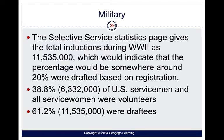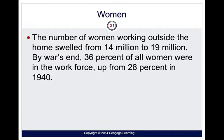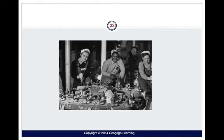Military-wise, the Selective Service total inductions during World War II were 11,535,000 — around 20% of those registered. 38.8% were volunteers and 61.2% were draftees. Government purchases of goods and services reached $89 billion in 1944, profits rose, and about half of annual production went to the war effort. Women working outside the home grew from 14 million to 19 million — contributions that are really understated.